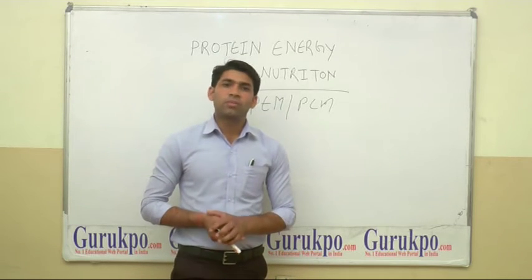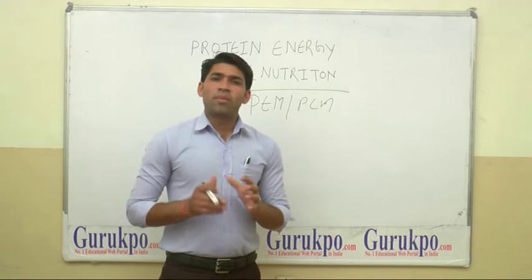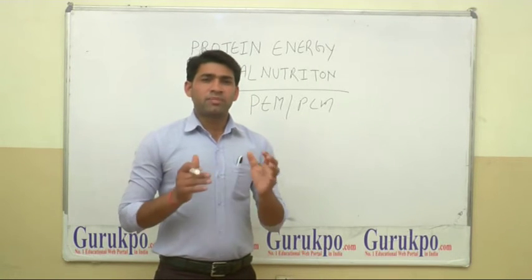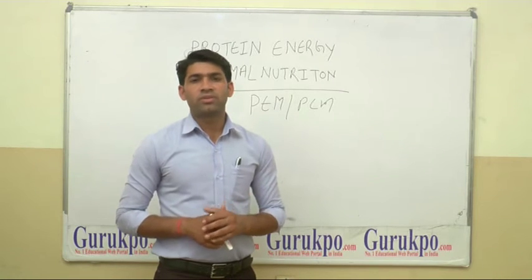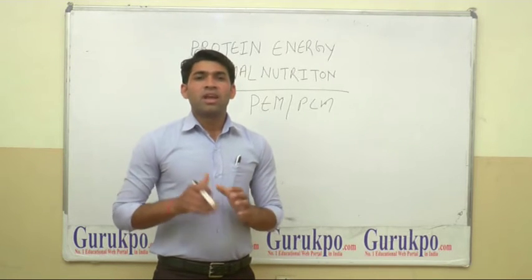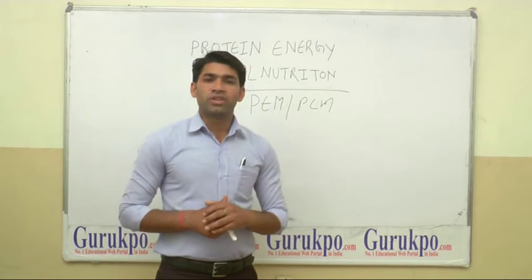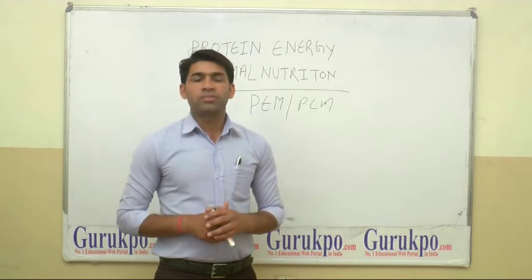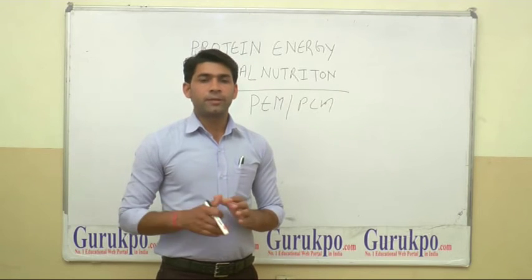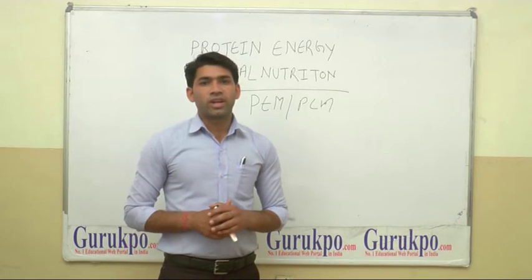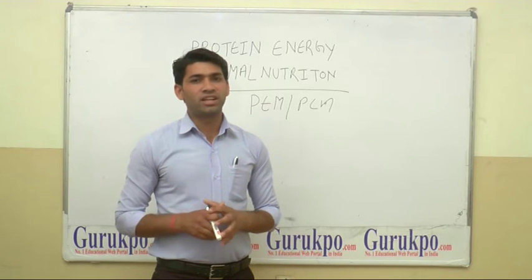Now we discuss about Protein Energy Malnutrition. Protein Energy Malnutrition is a common health problem in India. It is basically found in children between the age group of 6 months to 5 years. Protein Energy Malnutrition is also called Protein Calorie Malnutrition. The precipitating factors of PEM are infections like acute respiratory infections, communicable diseases, worm infestations, and measles.